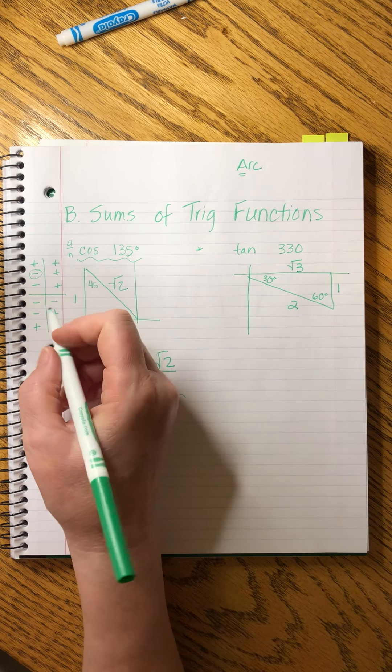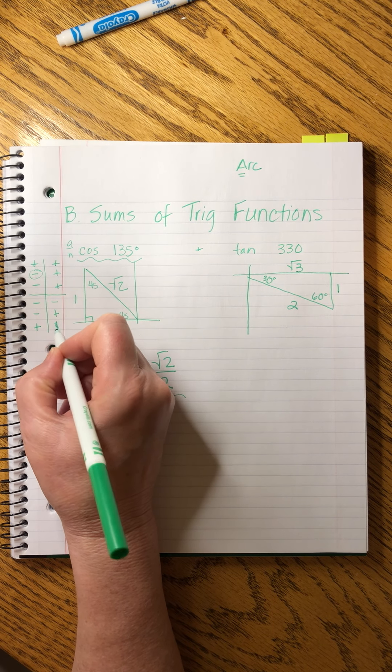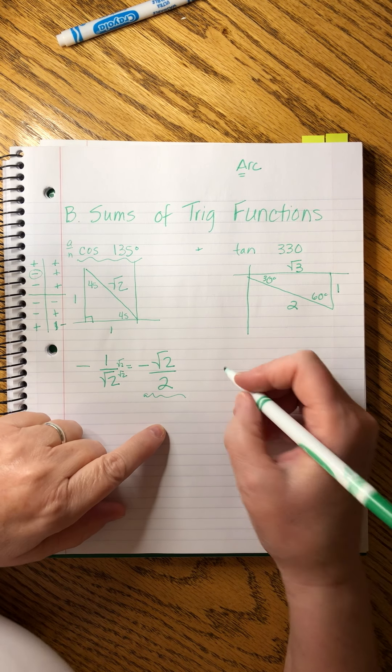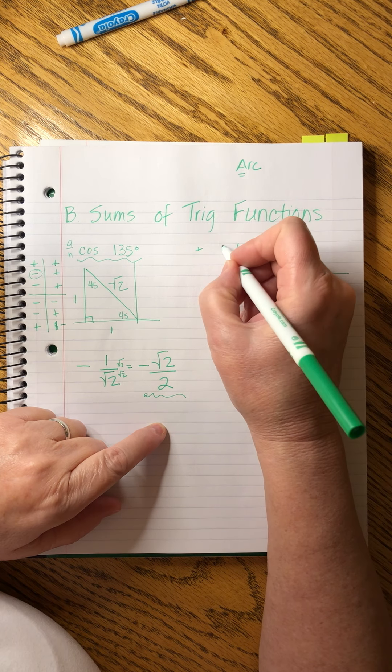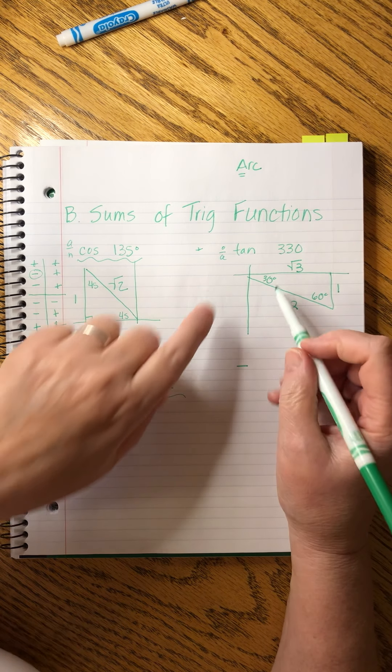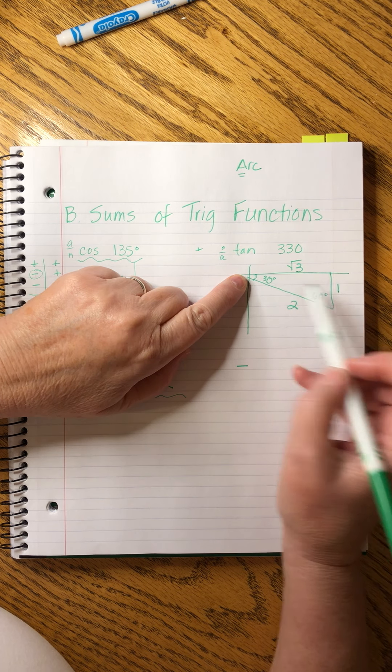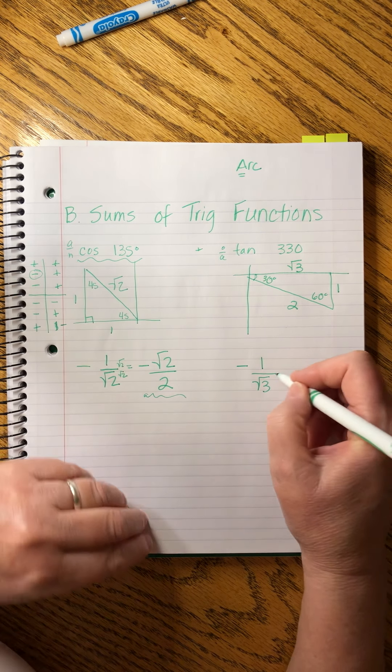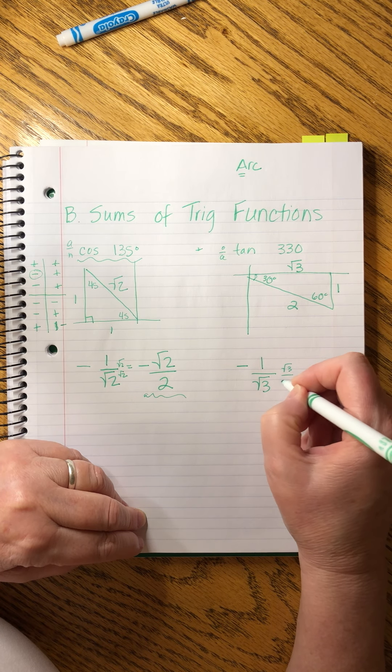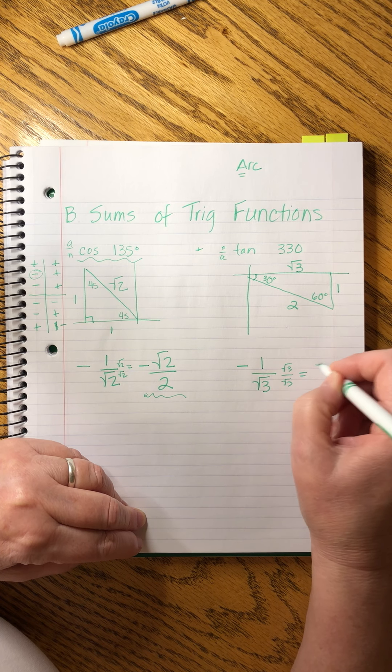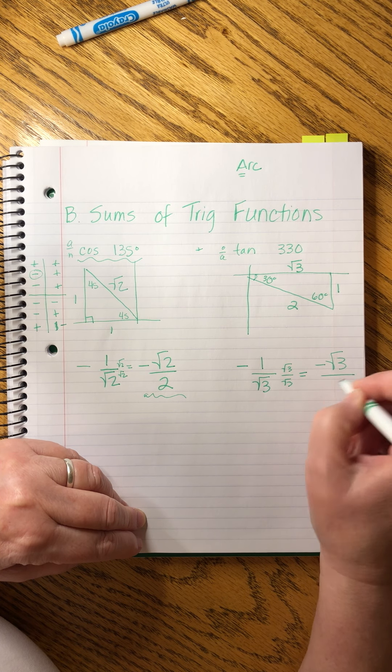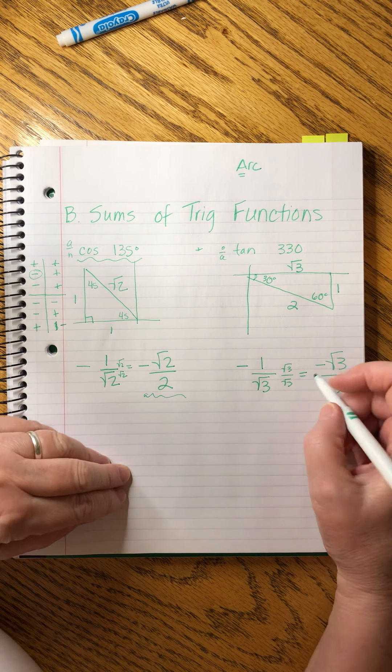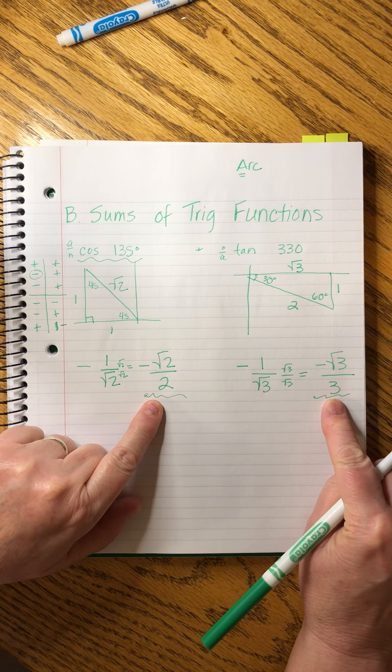Tangent in the fourth quadrant is negative. So that means our value is going to be negative and tangent is over Arthur. So from here, the opposite is one and the adjacent is square root of three. And then I'm going to rationalize that right away. And I'll get negative square root of three over three.